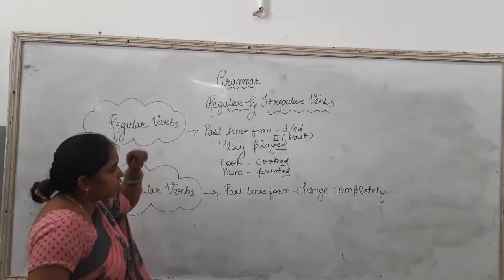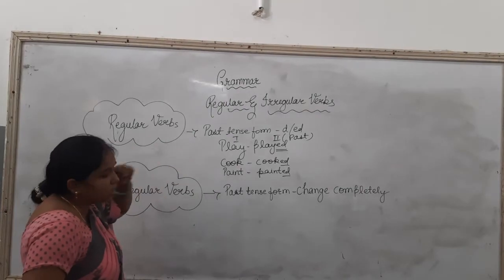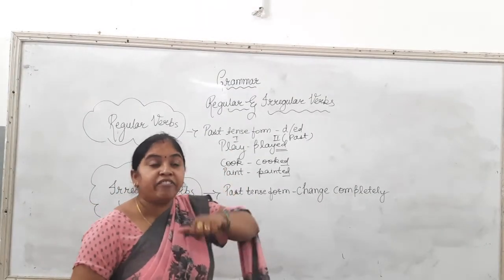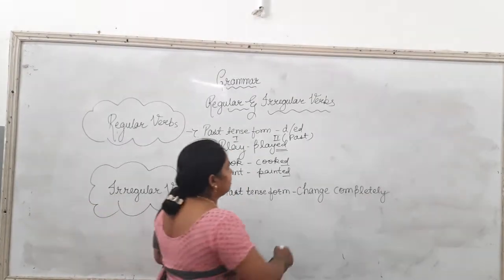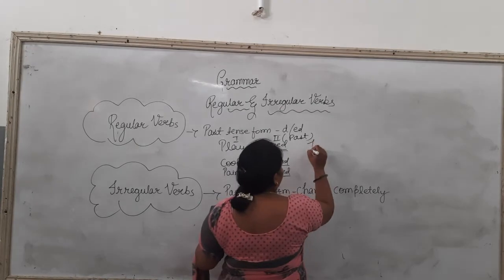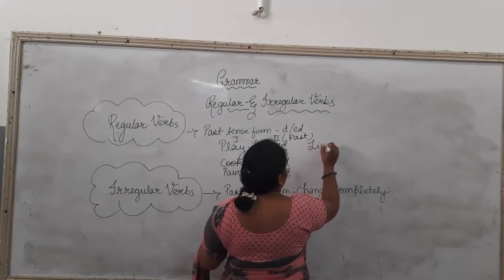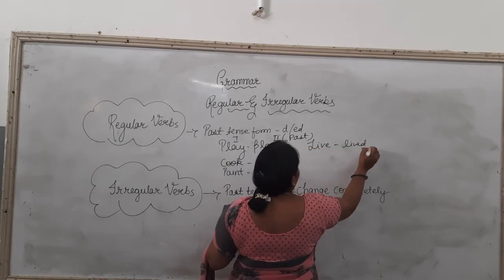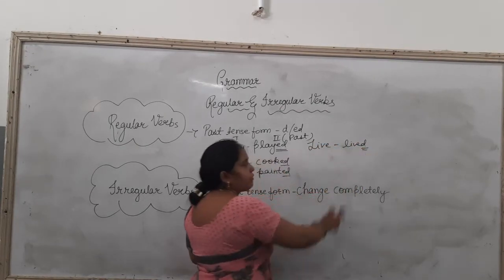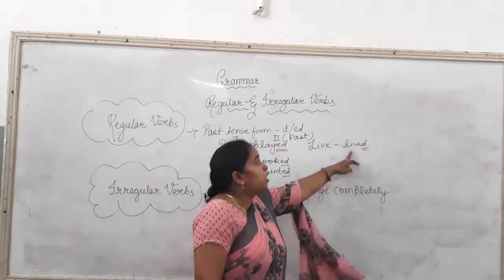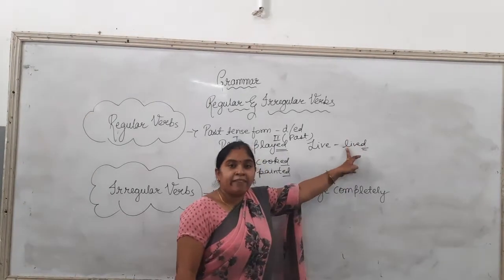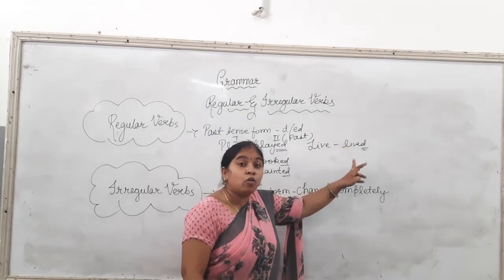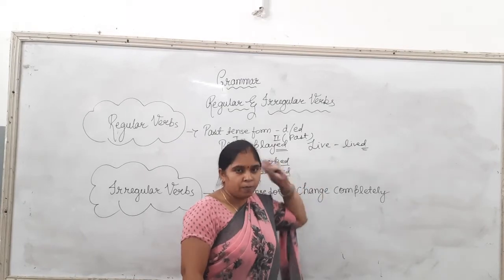For example, cook, paint, lift — and for a verb like live, we add only D to make the past form: lived. Here we are adding only D to make the second form of the verb, so this is also a regular verb.